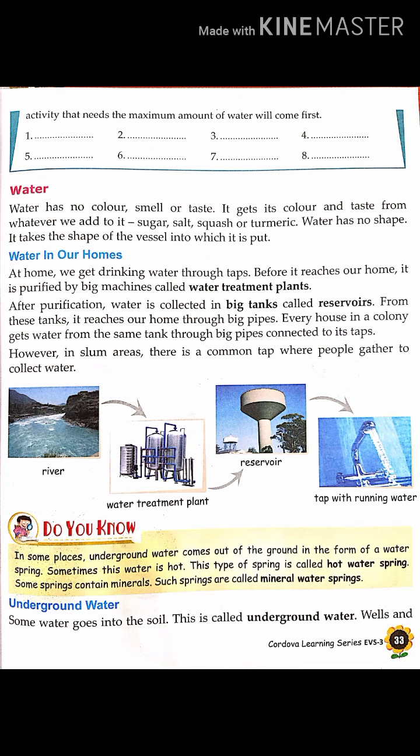However, in slum areas there is a common tap where people gather to collect water in different storing vessels. So to summarize: water comes from the river, then goes to the water treatment plant, then to the reservoir, and through big pipes it comes to our tap. See the picture — this is the big water tank and reservoir I have been talking about.